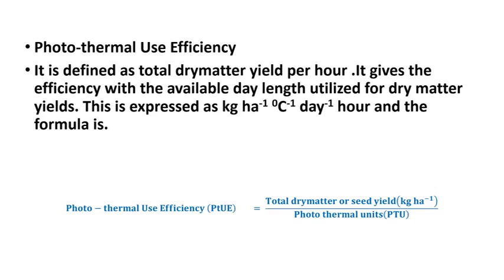Photothermal use efficiency (PTUE) is defined as the total dry matter produced per photothermal unit. It gives the efficiency with which the available day length is utilized for dry matter yields, expressed as kg per hectare per degree centigrade per day-hour. PTUE = total dry matter (kg/ha) divided by photothermal units accumulated.